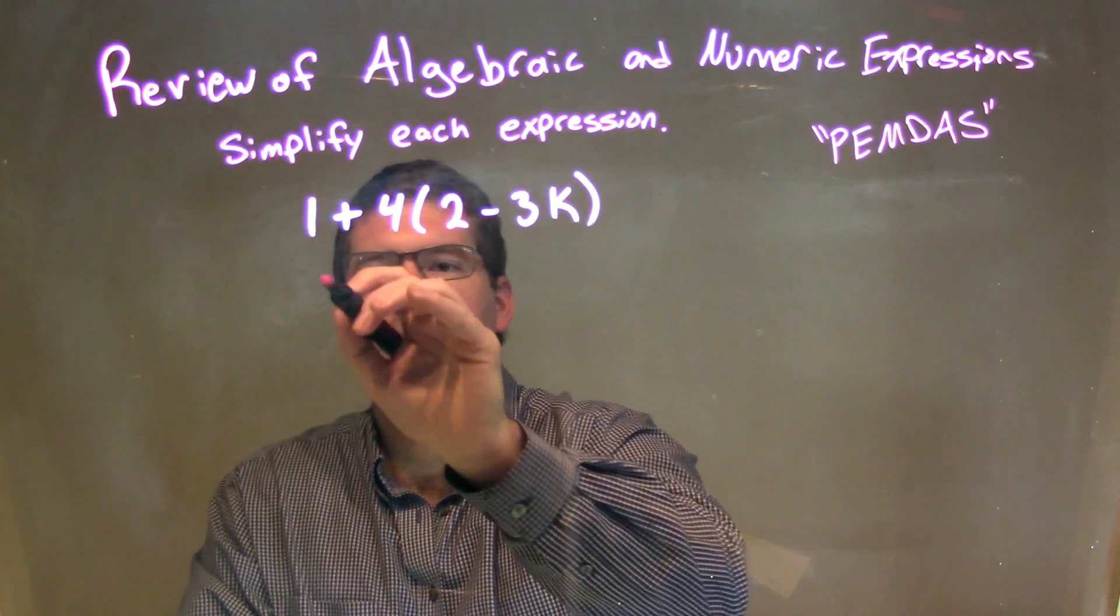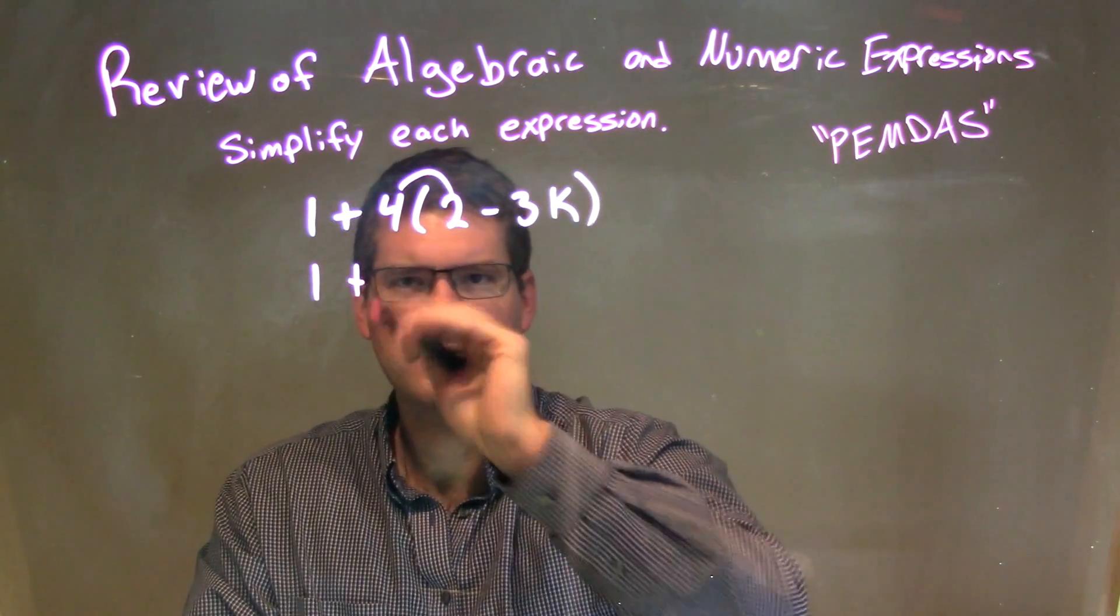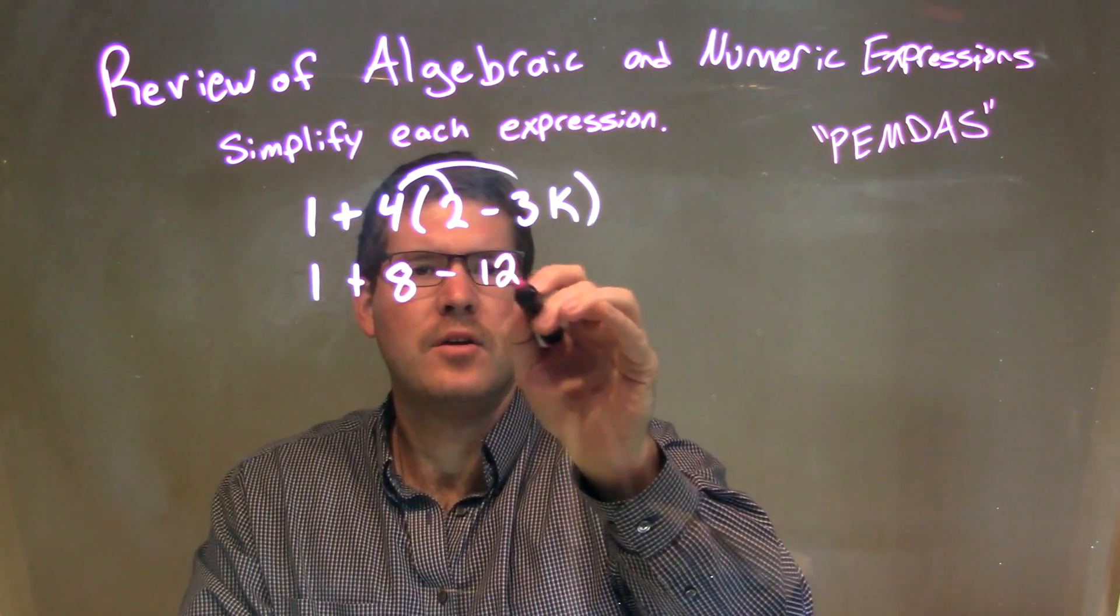So my first step is distributing that 4. So we bring down the 1 plus 4 gets distributed. 4 times 2 is an 8. And 4 times the minus 3k is minus 12k.